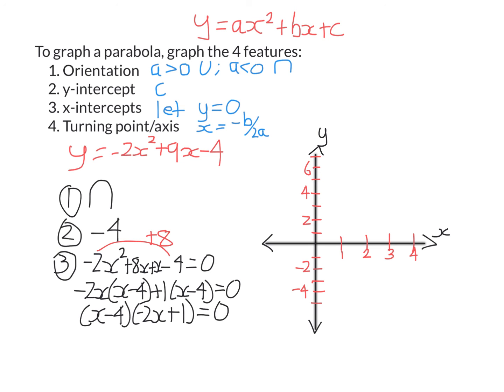The next step is to write the common factor out the front, and what's left — negative 2x plus 1 — goes in the second bracket. Using the null factor law, if the first bracket equals zero, x equals 4. If the second bracket equals zero, x is 0.5. Those are the two x-intercepts.